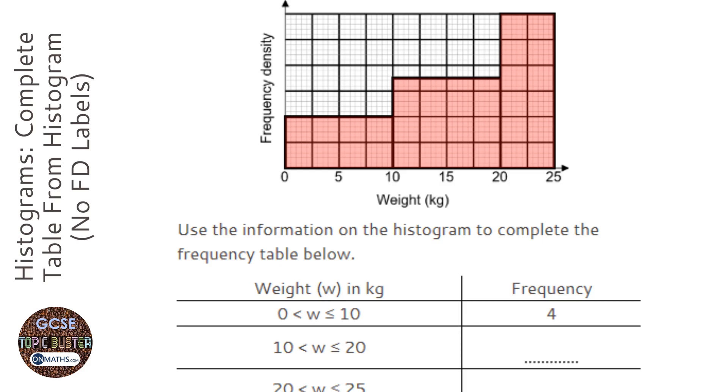What you can do is try and work out what the frequency density is for the first one. Well, the class width is 10, and the frequency is 4. So it's going to be 4 divided by 10, so that's going to be 0.4. And then therefore that's 0.2, 0.6, 0.8, 1, and 1.2.